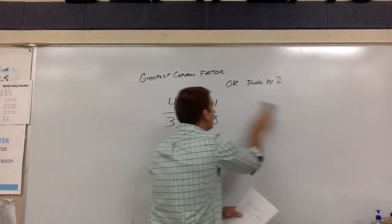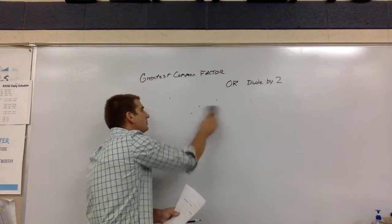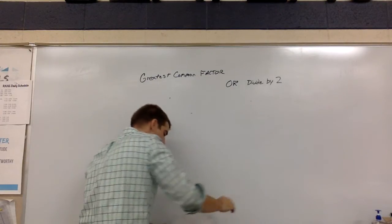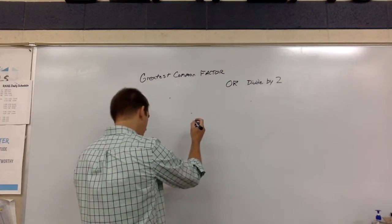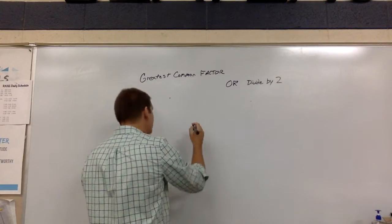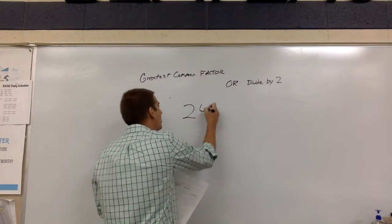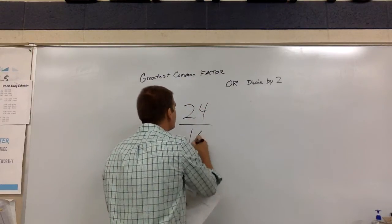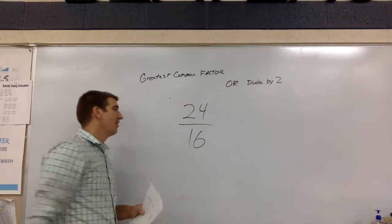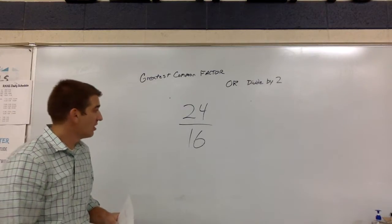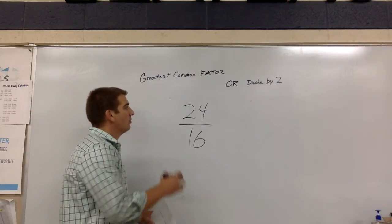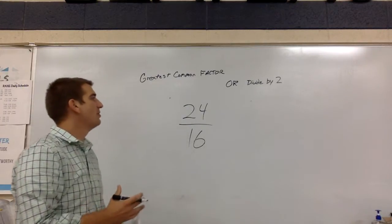Now we're going to give you one more example here. And again, this one, let's do number 8. This one is 24 over 16. So in this case, our numerator is larger than our denominator. So we can look at this and go greatest common factor. What number goes into 16 and 24? That is 8.